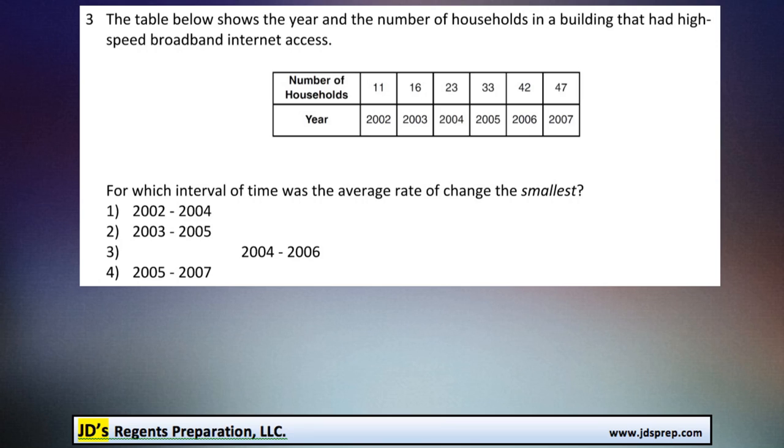Now, for this question, it's important to understand how to calculate rate of change. To do that, it's the change in the y variable. Some people express that as delta y—it's just a symbol that means the change in. And then we divide it by the change in the x variable. In this situation, the number of households that have high-speed internet is our y variable because it depends on the year. Y always depends on the x variable.